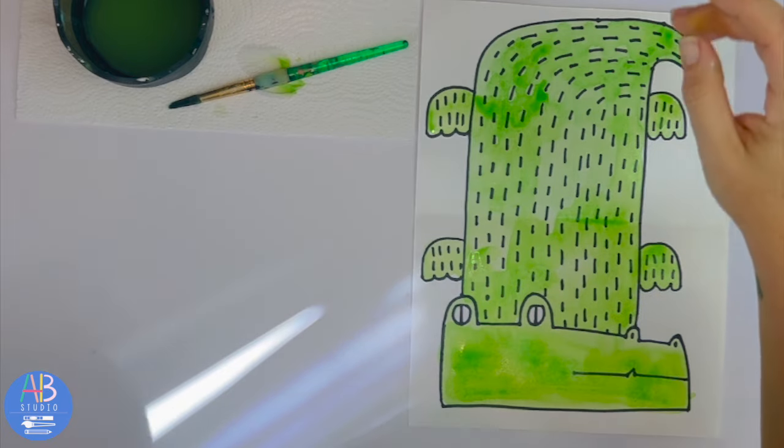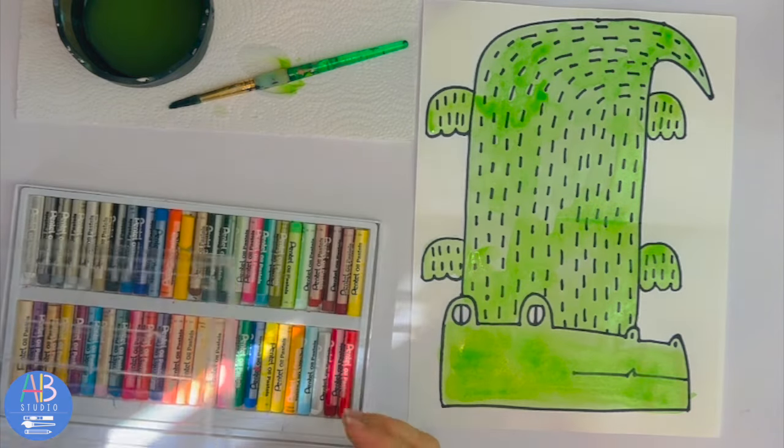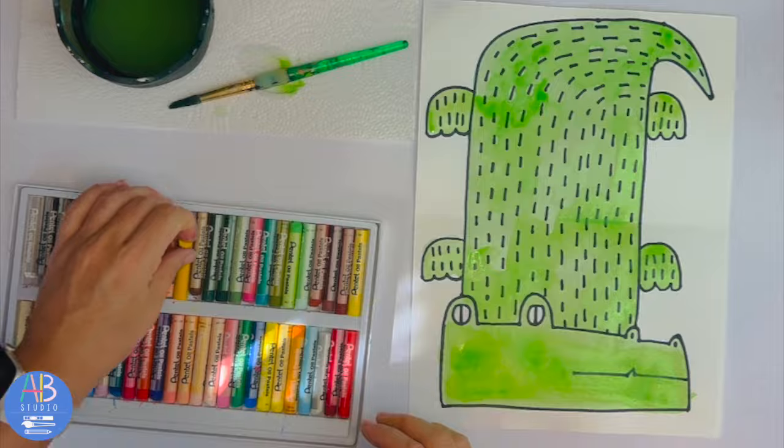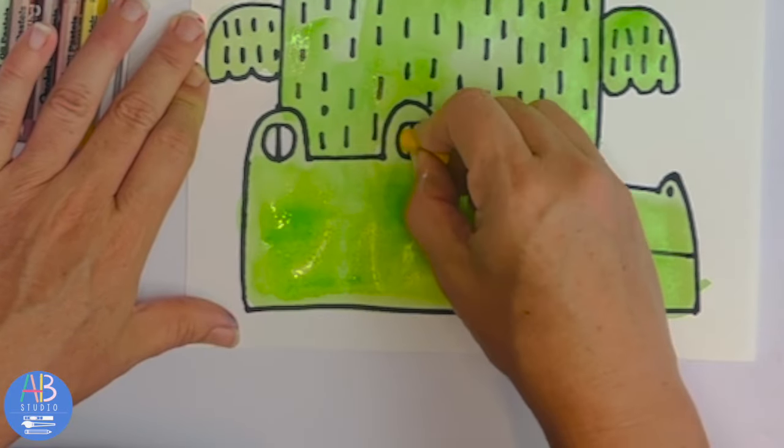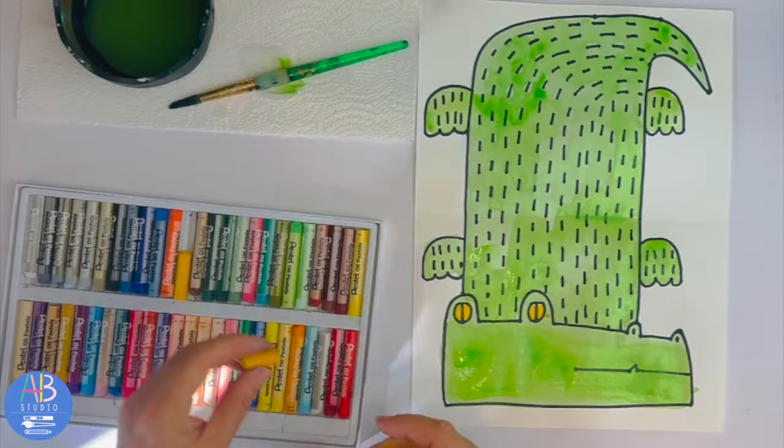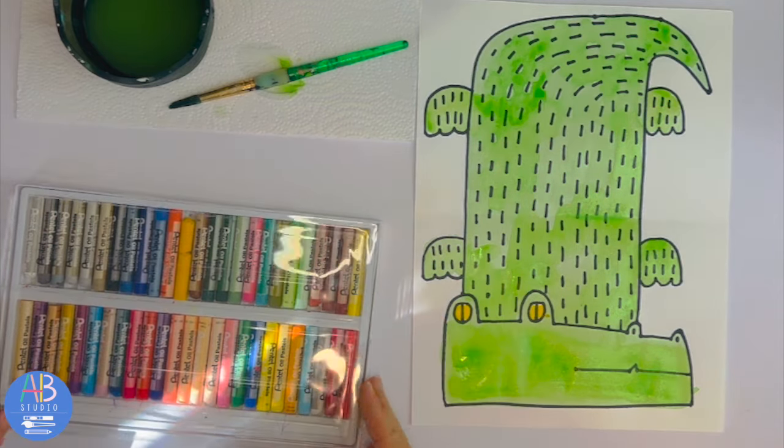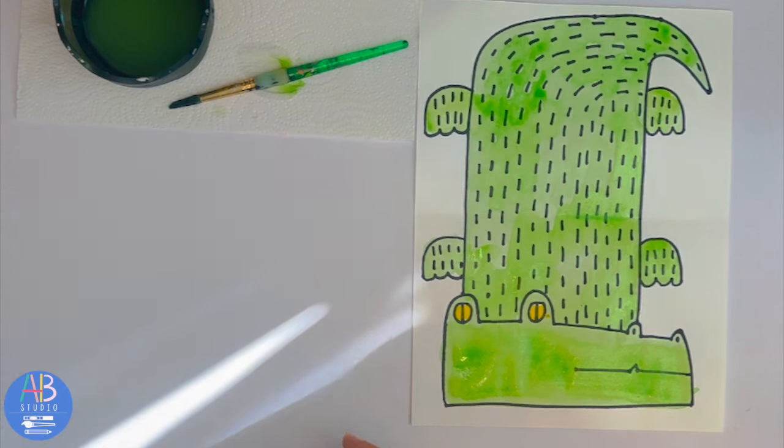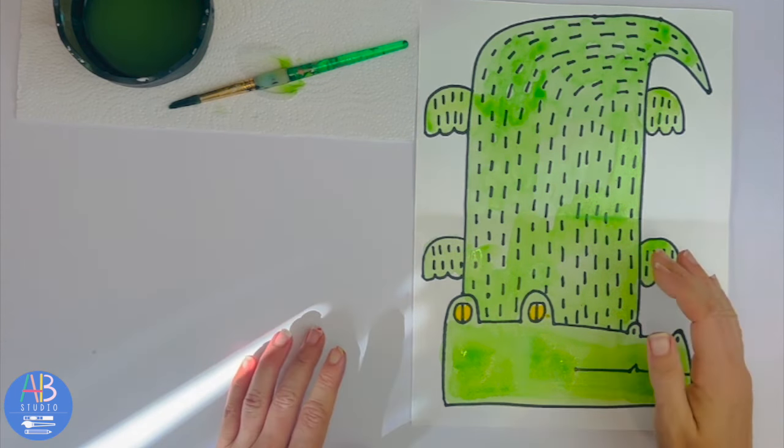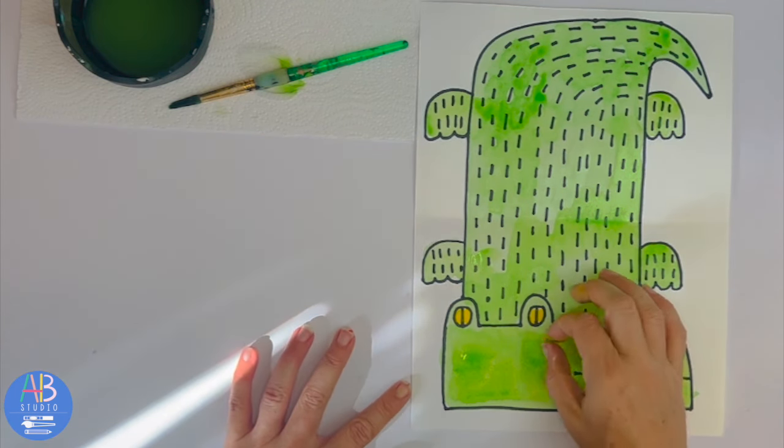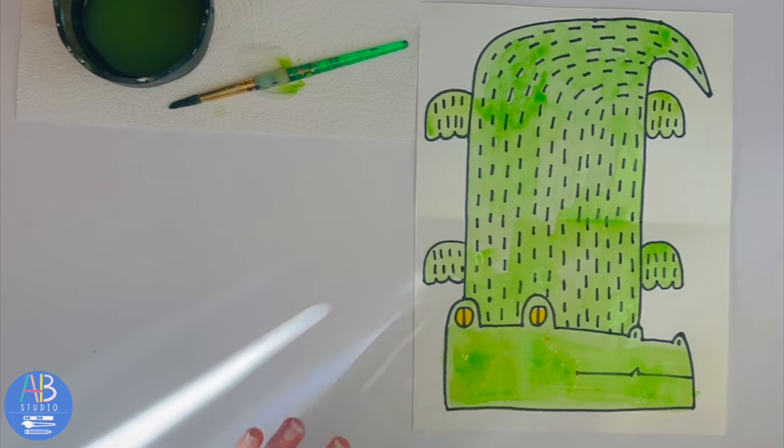You can use oil pastels to add the color of the eye. So a yellow oil pastel, or you can always use a marker or a crayon, oil pastel, colored pencil, some other medium to add that color in the eye because it's too small for a paintbrush. Again, this is gonna be put away and dried before we move on to the next part of the alligator.